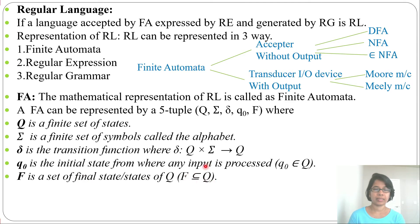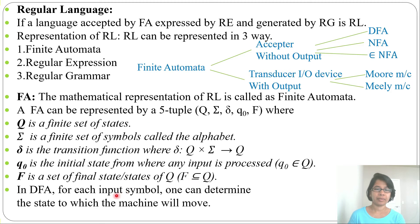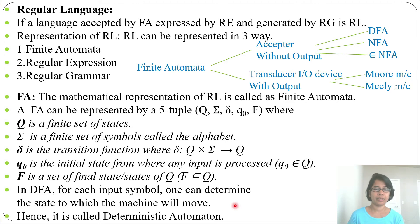Q0, the starting state, and the final states are all part of Q. In DFA, for each input symbol, one can determine the state to which the machine will move. In DFA, you can determine what will be the next state for a particular input symbol — that you can determine. Hence, it is called deterministic automaton, because you can determine what will be the next move.